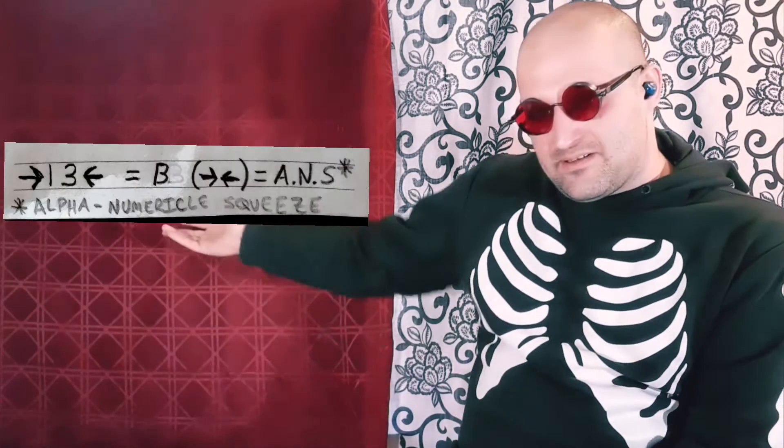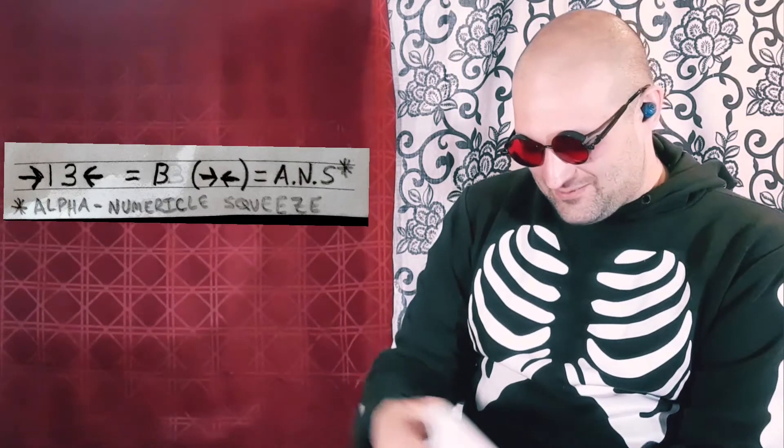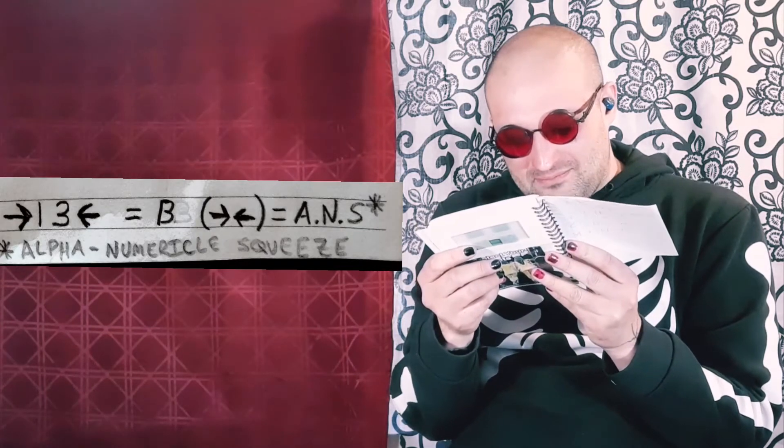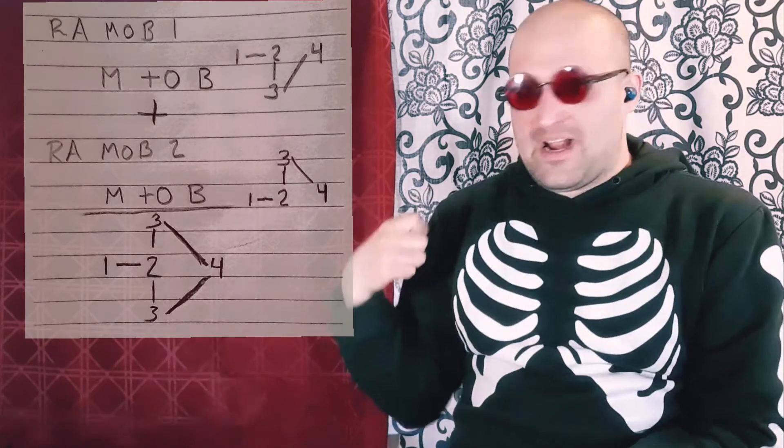And then also — oh my God, what's happening? The alpha numerical squeeze, here as I show you, my example is 13. I actually don't know — I made that term up: alpha numerical squeeze, with the two arrows, as you see here and here. And then when you overlap the two RAMOBs, you get this arrow, and it's pointing right at me.